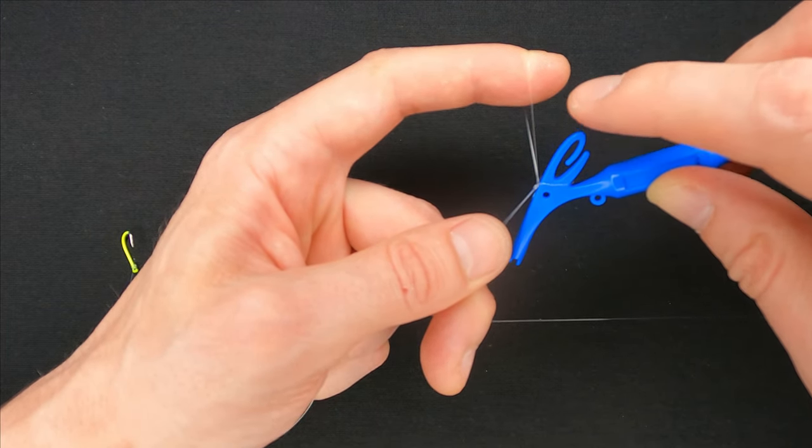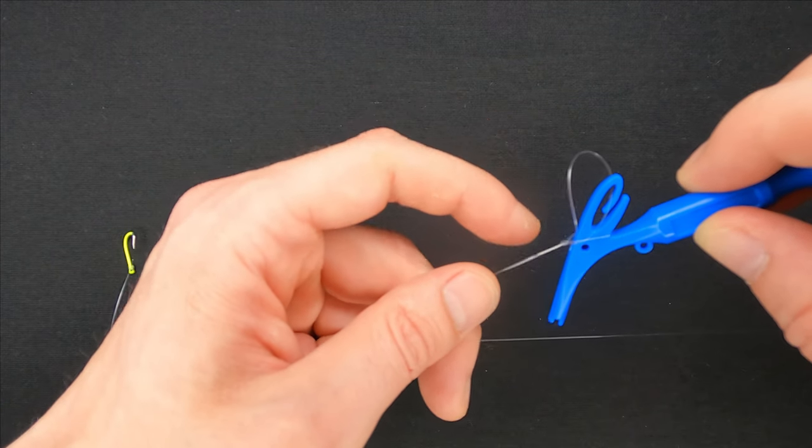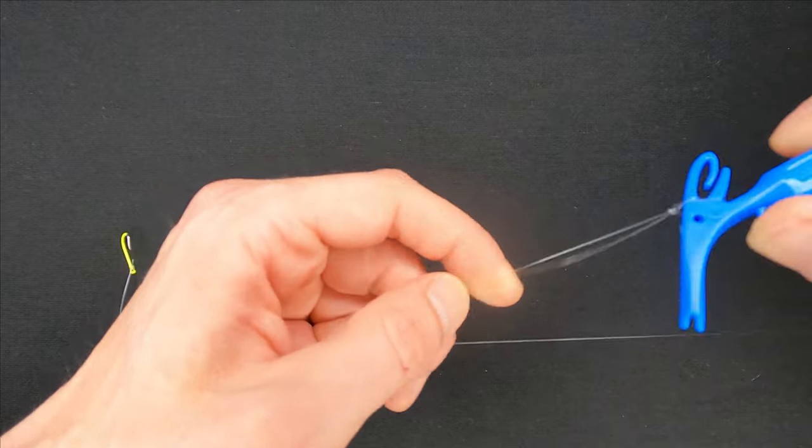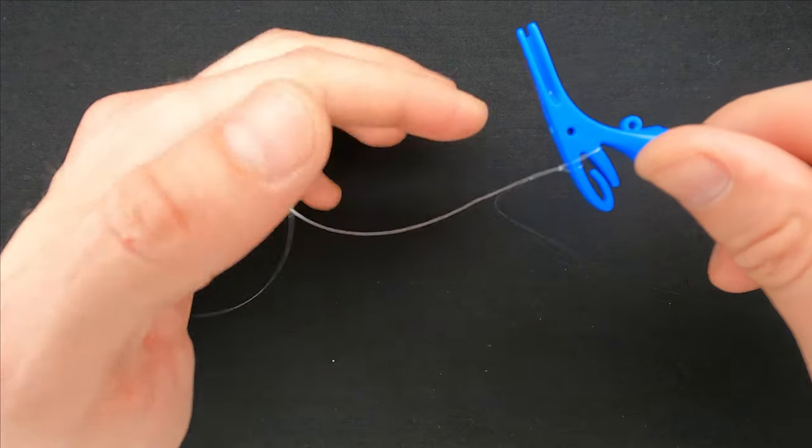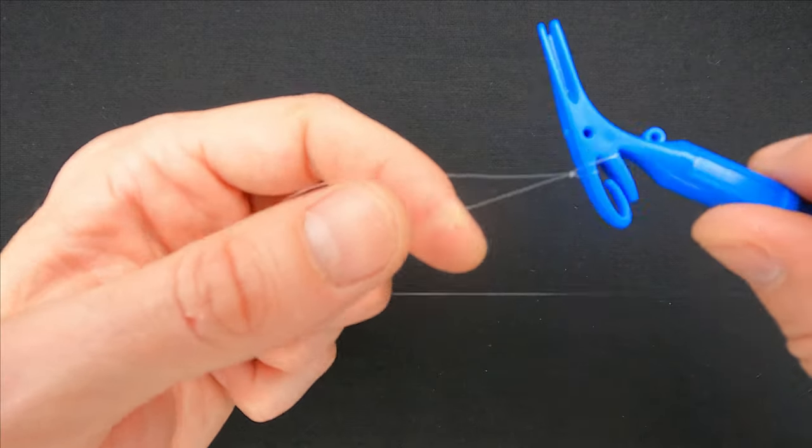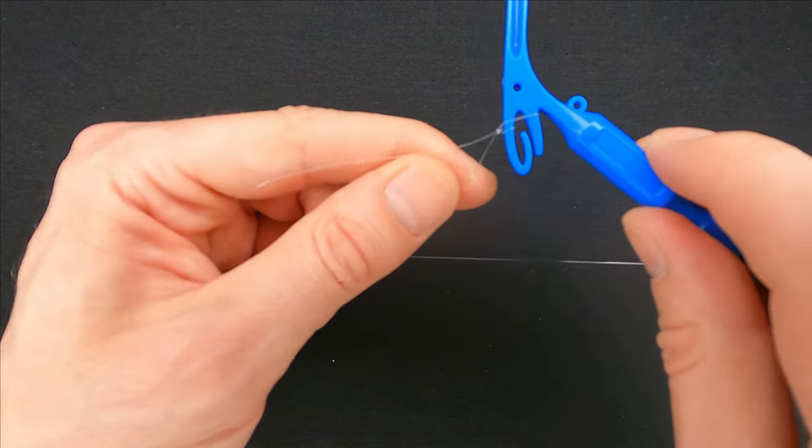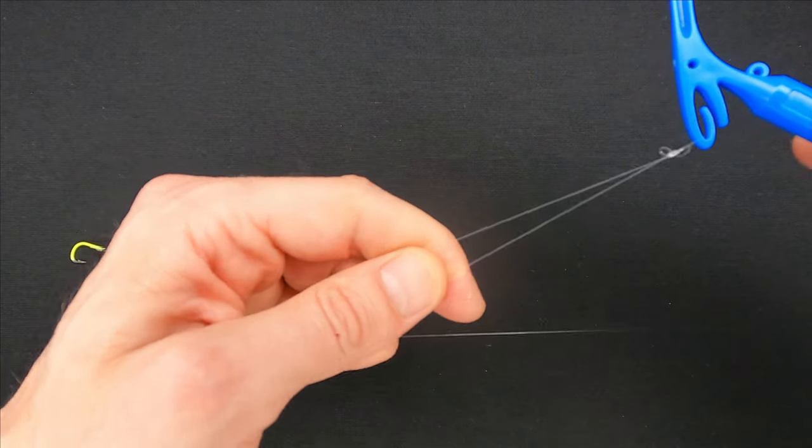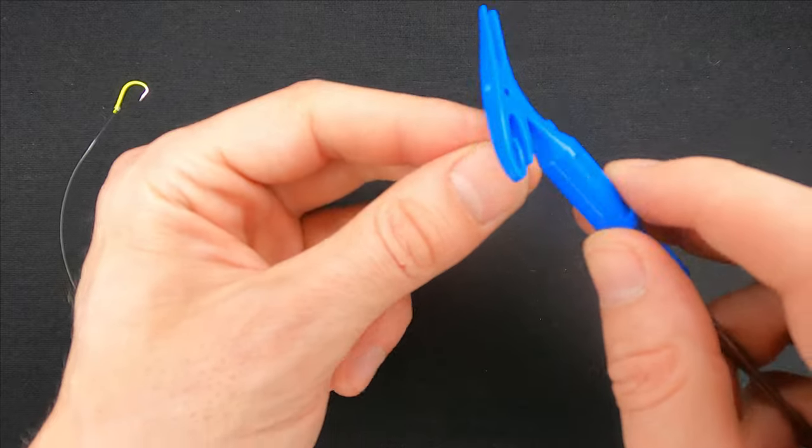The loop that you are holding with your index finger goes onto this top part of the knot tyer. Pull the line to make the knot tight and remove the line from the bottom part of the knot tyer. Pull the main line one more time and that is it.